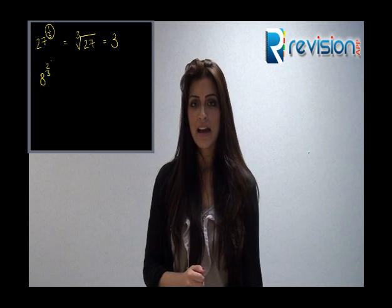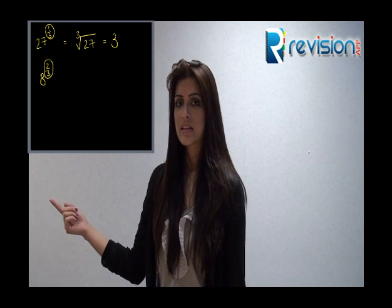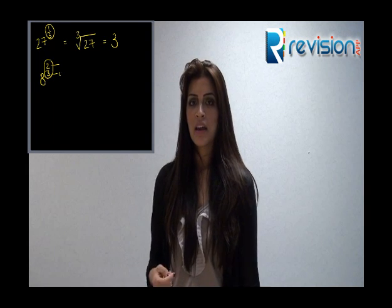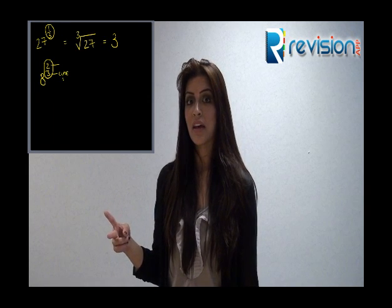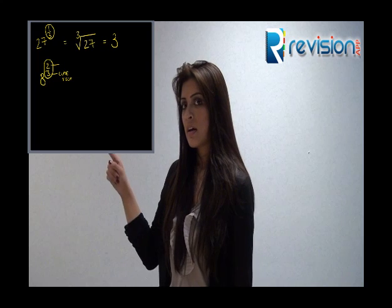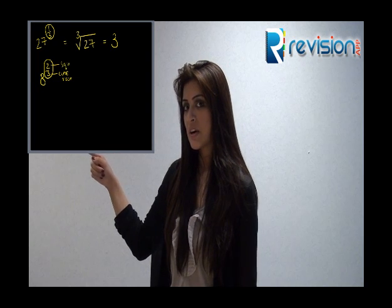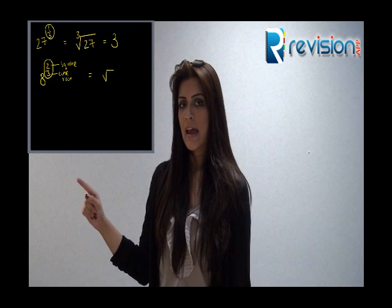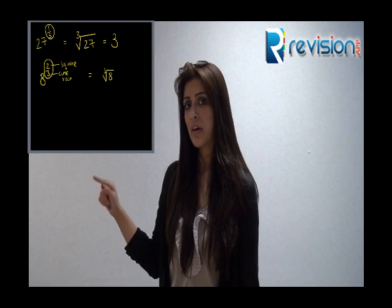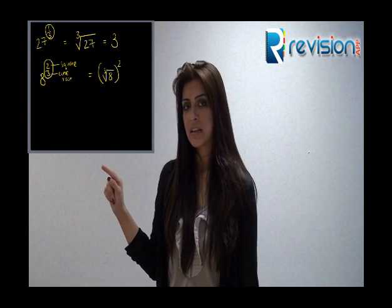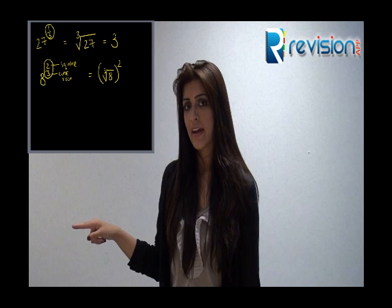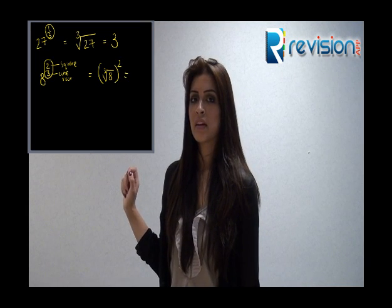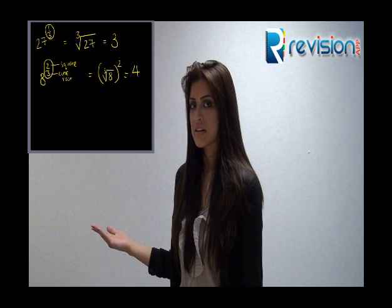What if we had 8 to the power of 2 thirds? Now there are two things that we must do here — the numerator and the denominator. 8 to the power of 2 thirds means the cube root of 8, all squared, which gives you the answer.